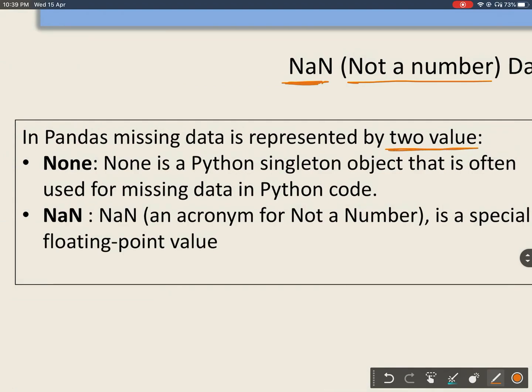It is by None or NaN. None is a Python singleton object that is often used for missing data in Python. You have seen that None is a data type in Python which is an object.